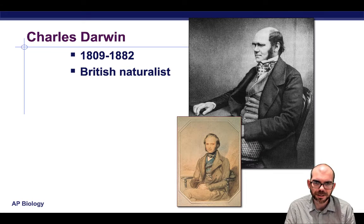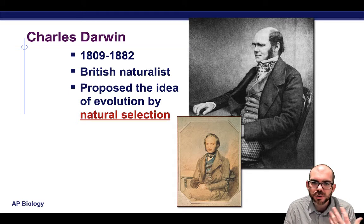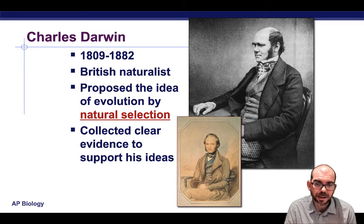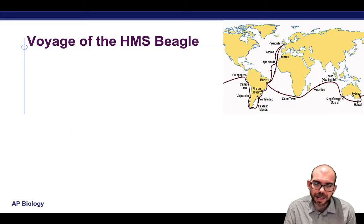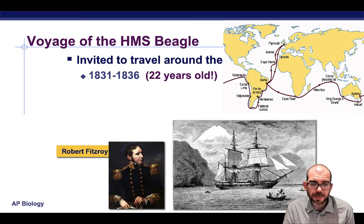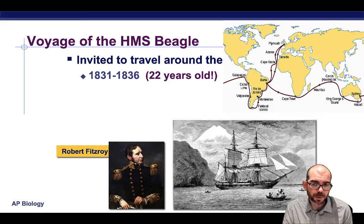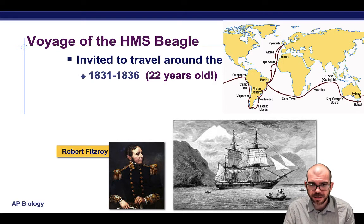Let's look at Charles Darwin. Darwin was born in 1809 and lived until 1882. He was a British naturalist — a time before the distinctions of biologist, chemist, or physicist. A naturalist meant you were interested in questions regarding the natural world. He proposed the idea of evolution by natural selection and collected evidence to support these ideas. A lot of his thinking came from his voyage on a ship called the HMS Beagle. He was invited to travel around the world at only age 22, captained by Robert Fitzroy. It was common for well-educated naturalists like Darwin to be offered a voyage in exchange for providing education and conversation on the journey.